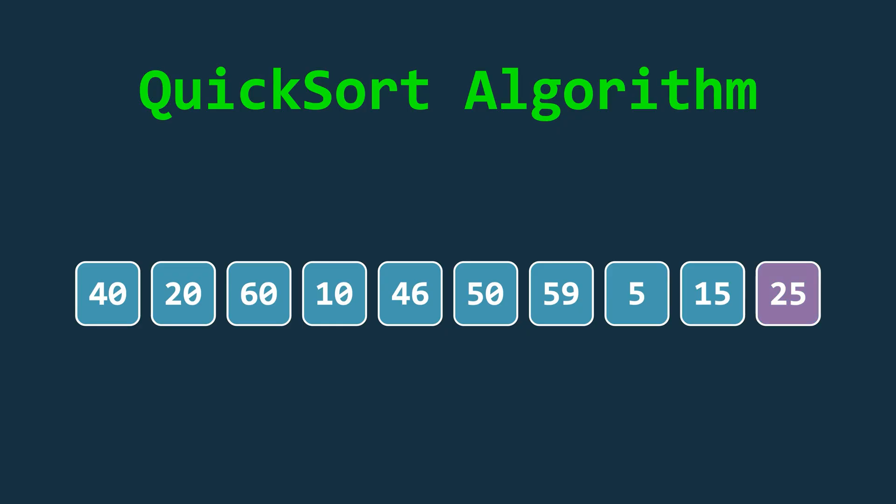In our case, we will choose the last element as the pivot. Here, that's the value 25. The idea is to rearrange the array so that all elements smaller than the pivot move to the left and all larger elements move to the right, represented by blue and red colors respectively. We then recursively apply the same steps to both halves until each subarray has only one element, which is considered already sorted.